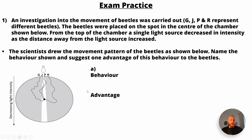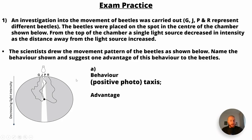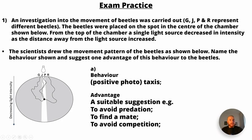Behaviour A would be positive phototaxis because we can see G, J, P and R all move towards the light source. What would the advantage be? You'd have to give a suitable suggestion — for example, it could be to avoid predation, to find a mate, or to avoid competition.